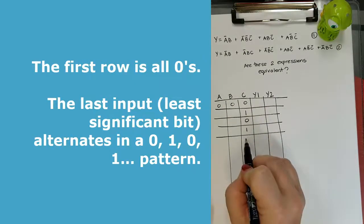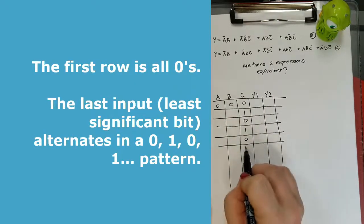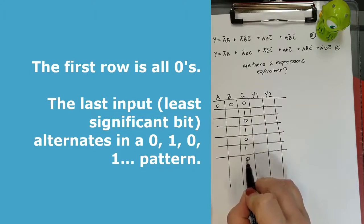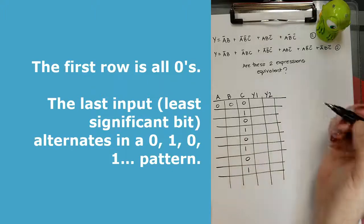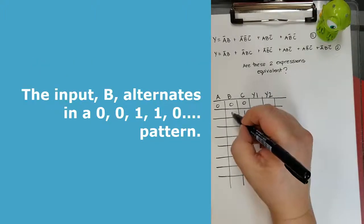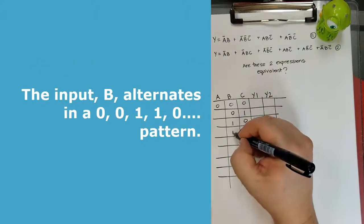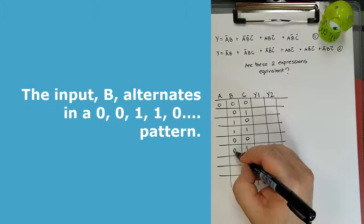And so that last digit, C, is going to alternate zero, one, zero, one. And then B goes zero, zero, one, one, zero, zero, one, one, like that.